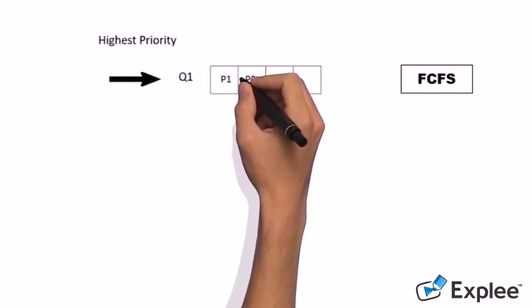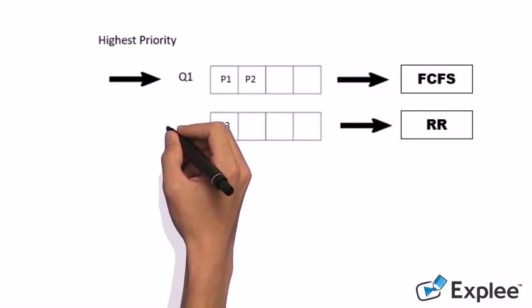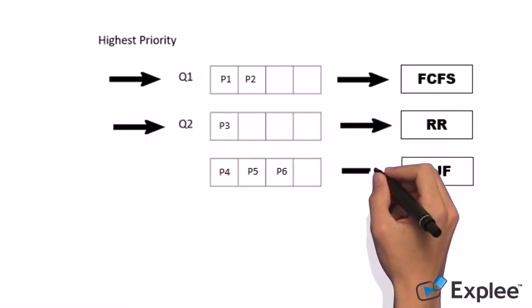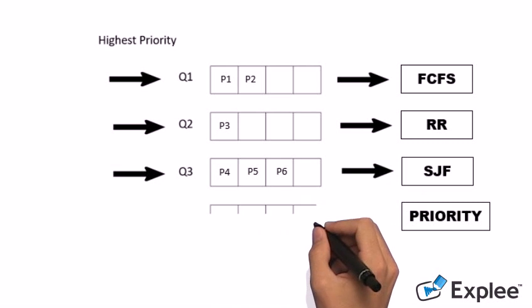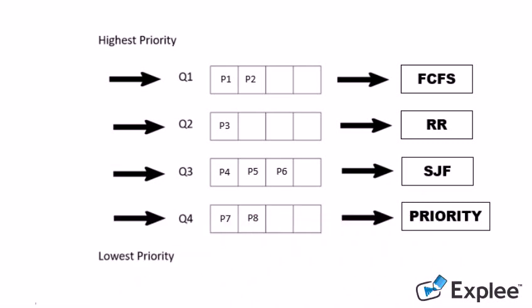There might use each one of the CPU scheduling algorithms in each queue. So here we use FCFS, RR, SJF, and Priority.